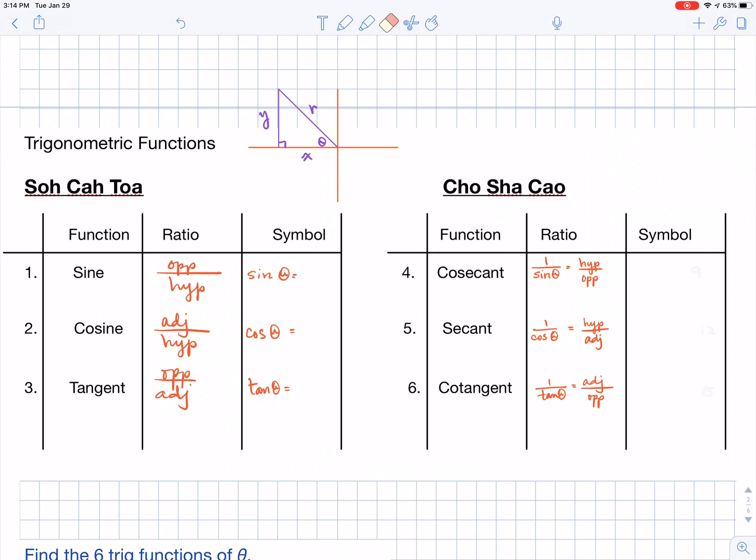Now, as far as symbols are concerned, cosecant is abbreviated CSC. Notice it still has the theta. Secant is going to be SEC. And cotangent is COT.